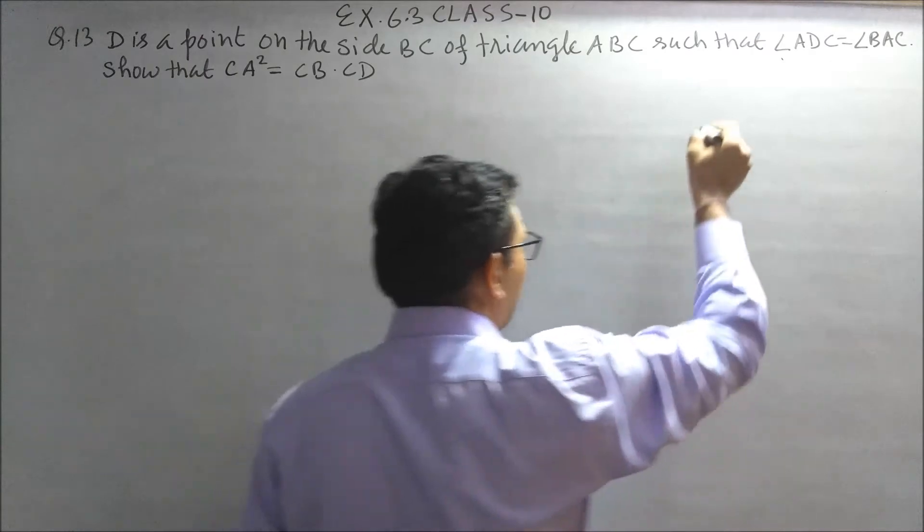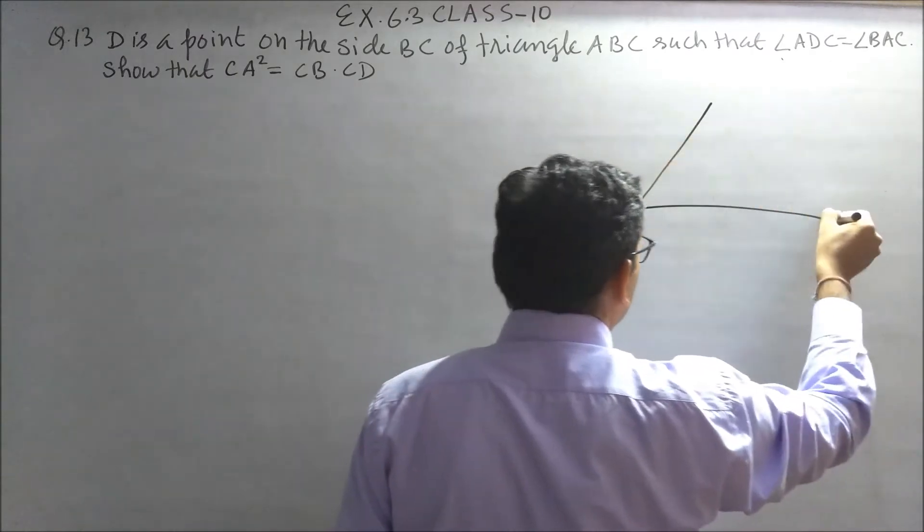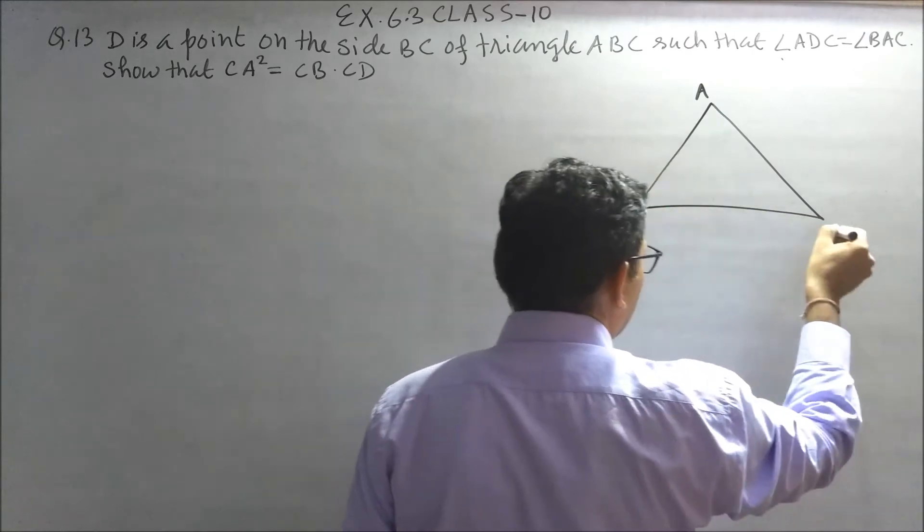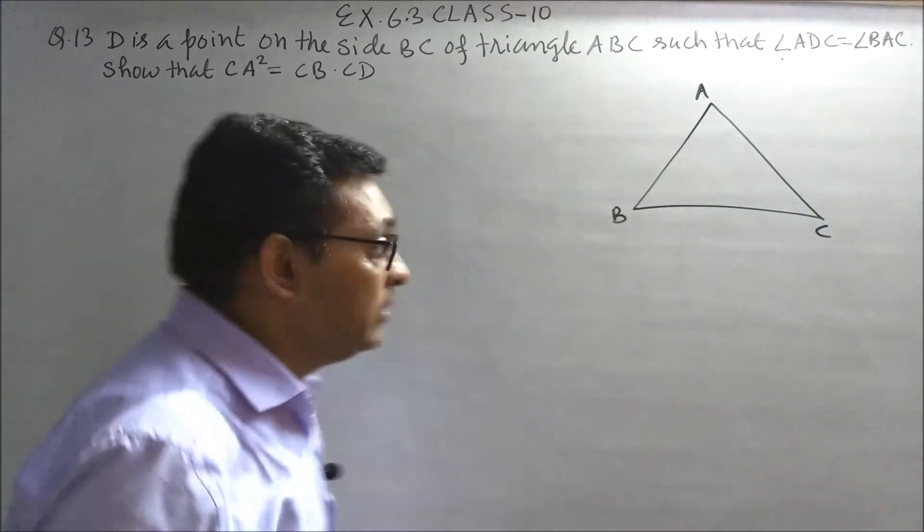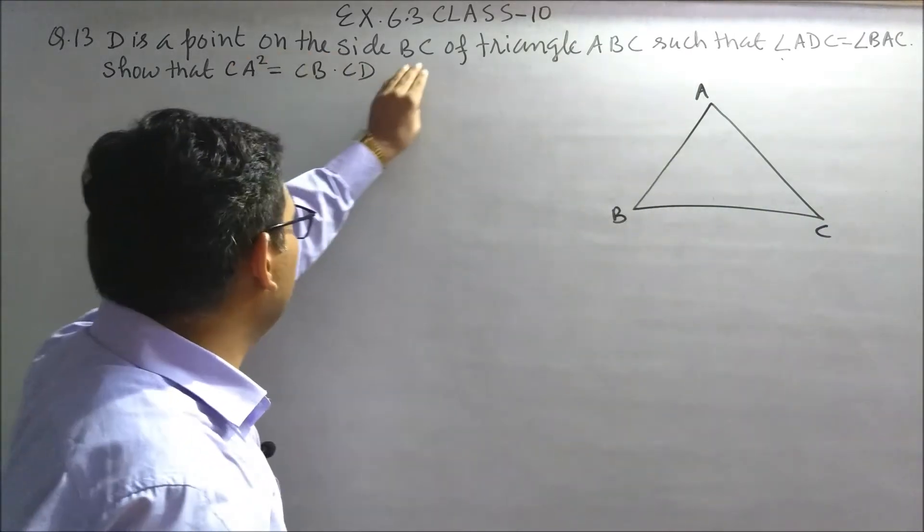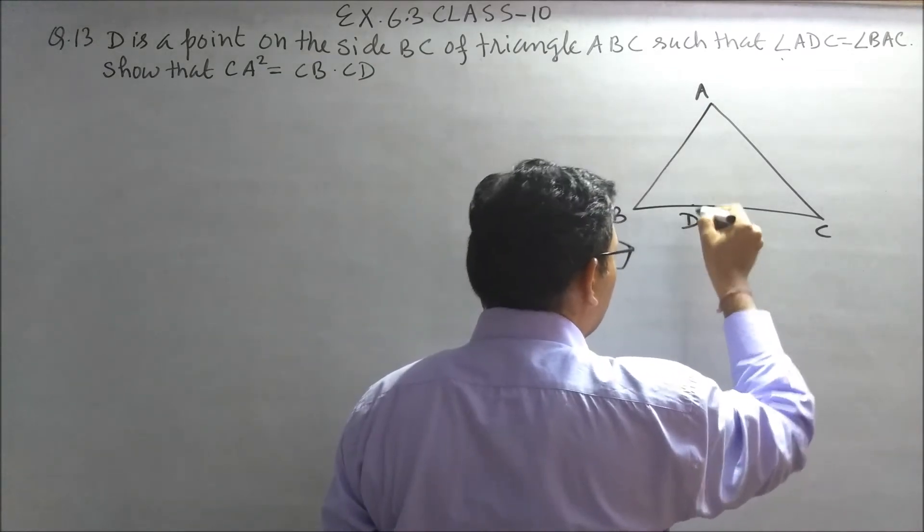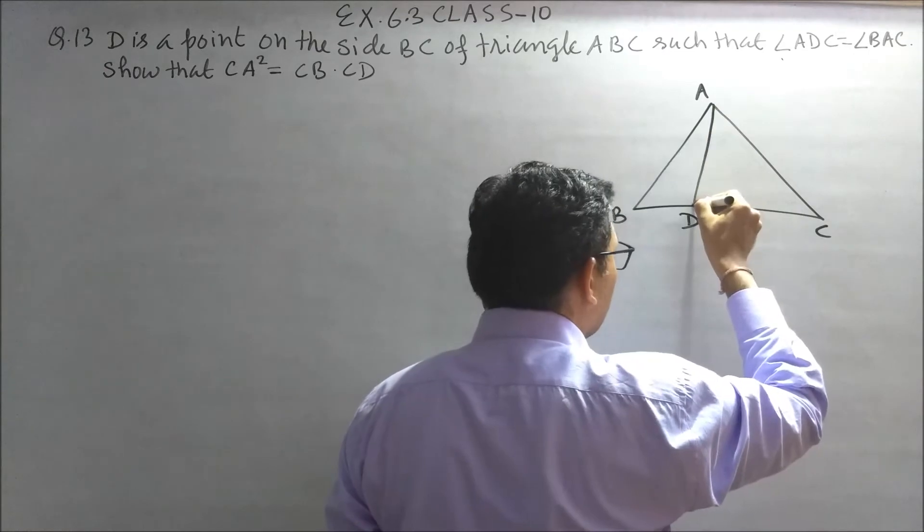Let's first draw the figure. Suppose we have a triangle ABC. We are given D is a point on the side BC, so point D is on BC. Now let's join A to D.